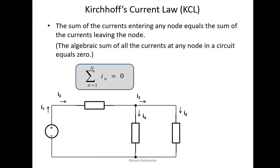Now we will start by discussing Kirchhoff's current law. Kirchhoff's current law says that the sum of all currents entering any node equals the sum of the currents leaving the node. It simply means that the algebraic sum of all currents at any node in a circuit equals zero. This symbol represents our algebraic sum from n equal to one, depending on the number of currents that we have, so summation of i_n must be equal to zero.